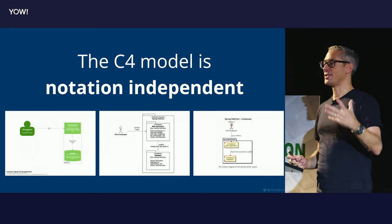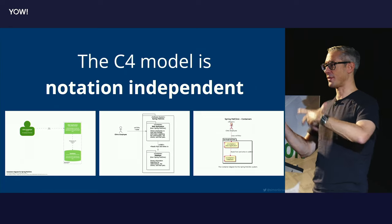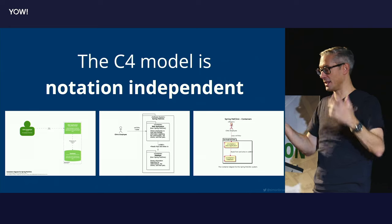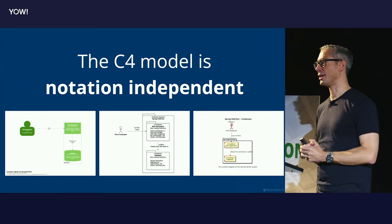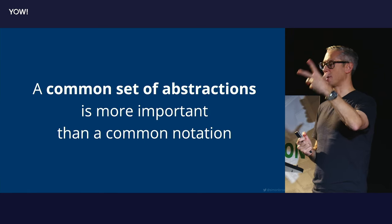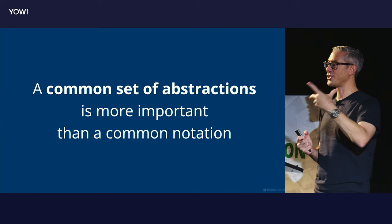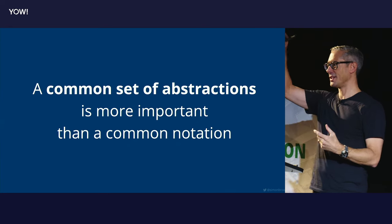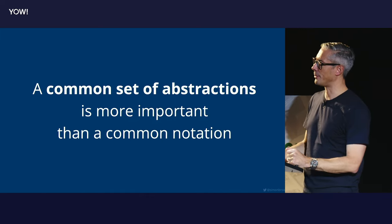The C4 model is notation independent. You can use boxes and arrows with a self-describing notation like you would use on a map — a key or legend is a good way to solve that — or you can use something like UML if you want to. The concept here is a common set of abstractions is much more powerful than a standardized notation. So really the C4 thing is a set of abstractions and a set of hierarchical diagram types. That's the C4 in a nutshell.